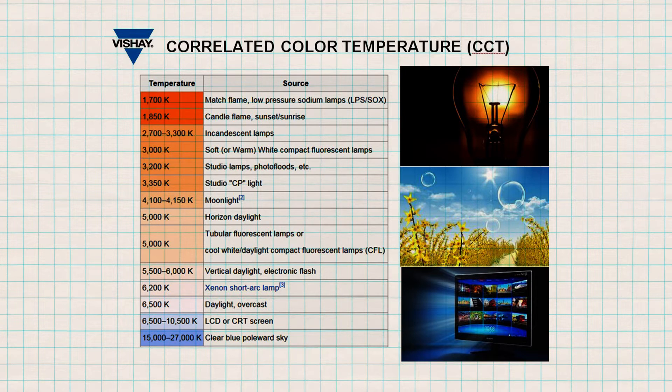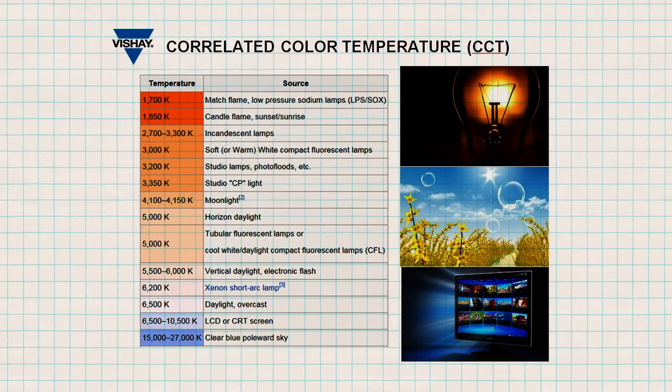And a color is cold when the temperature is high. Indeed, blue looks cold for a human being. In order to calculate a light temperature, it is necessary to measure the power of red, green, and blue. Then some matrix calculation and a formula called the McCamy formula gives the correlated color temperature.